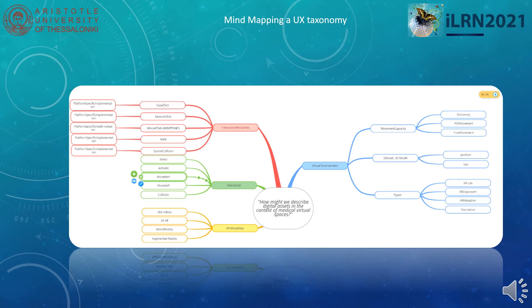This broad mind mapping of a conceptual hierarchy consists of four large categories: one for the type of virtual environment, one for the interaction modalities that can exist, another for the types of interaction in those environments, and finally one for the type of VR that could exist in the environment.